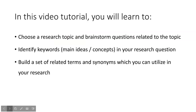In this tutorial, you'll learn to generate research questions related to a topic. You'll pick out the key terms or phrases from one of the research questions, and then build a set of related words and synonyms for each of the keywords. These keywords should come in handy when you start searching for information on your topic, especially in the library databases. This is a great exercise to complete when you're getting started on a research paper or project.